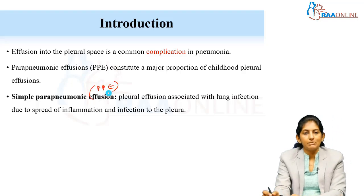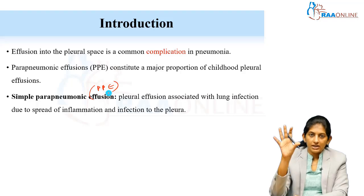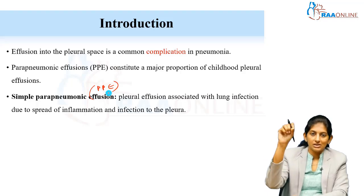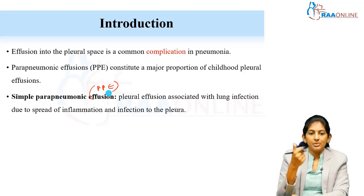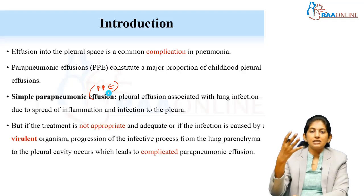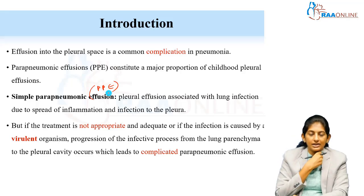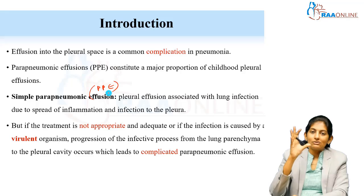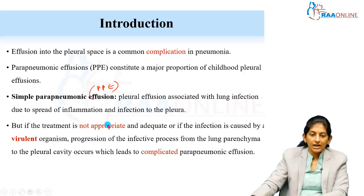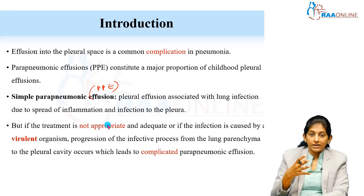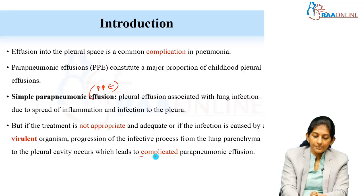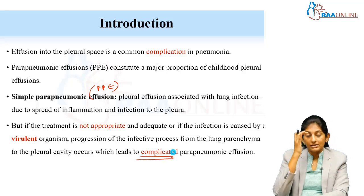Parapneumonic effusion, abbreviated as PPE — a simple PPE occurs when a lung parenchymal infection spreads inflammation from the parenchyma to the pleura, causing a minimal pleural effusion. When you treat the pneumonia with adequate antibiotics at the right time with good sensitivity, this effusion will not progress. However, when treatment is not appropriate or adequate, or the infection is caused by a very virulent organism, the infective process progresses into the pleura, causing a complicated parapneumonic effusion with systemic features.